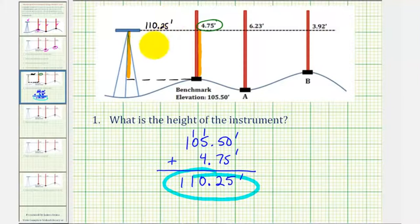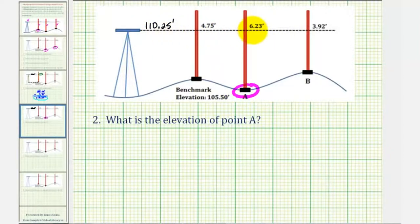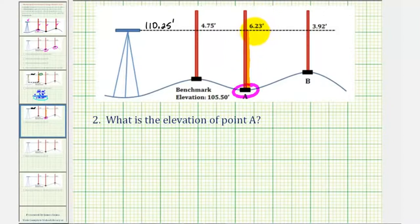This is important because it will help us find the remaining elevations at point A and point B. To find the elevation at point A, notice how the elevation to this line of sight is 110.25 feet. The elevation we want is below this, and the length from the line of sight to point A is the reading of 6.23 feet, or 6 and 23 hundredths feet. So to find the elevation at point A, we take the height of the instrument and subtract the reading of 6.23 feet.